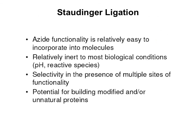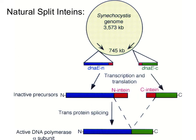In Staudinger ligation, the azide functionality is relatively easy to incorporate into molecules, relatively inert to most biological conditions, and offers selectivity in the presence of multiple functional group sites, with potential for building modified or unnatural amino acids. Regarding split inteins: natural split inteins have the N and C-terminal intein halves split apart, allowing them to come together and splice — this is called trans-protein splicing.